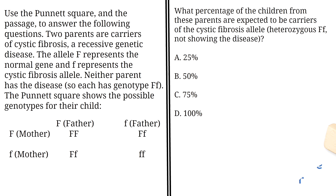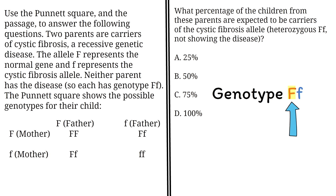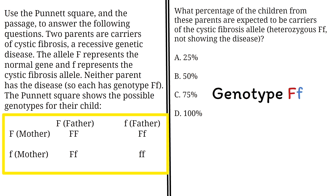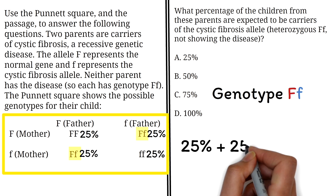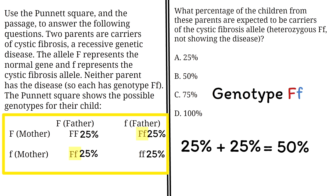The heterozygous genotype Ff contains the recessive cystic fibrosis allele. However, the disease does not appear because the dominant allele capital F overrides it. This means children with genotype Ff carry the cystic fibrosis allele but will not have the disease themselves. Looking at the Punnett square, two out of the four possible genotypes are the heterozygous Ff genotypes. Since each genotype has a 25% chance, we add 25% plus 25%, which gives us 50%. So the answer is B.